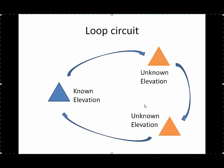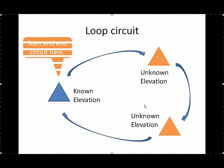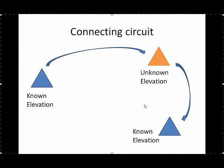Not only do we have the distinction between benchmark circuits and profile circuits, but we also have loop and connecting circuits. So if you start a level circuit and end it in the same place, we call it a loop circuit. You start at some known elevation and measure other locations to make unknown elevations known, starting and ending in the same place. A connecting circuit allows you to use multiple benchmarks.